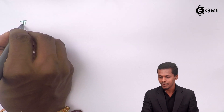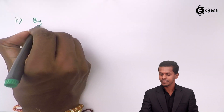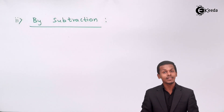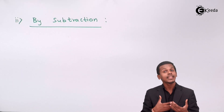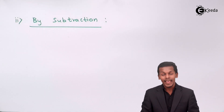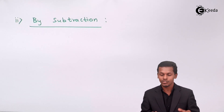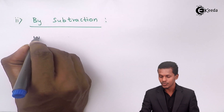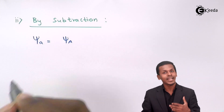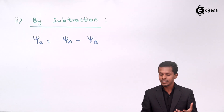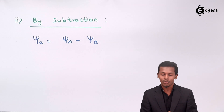Anti-bonding orbitals are formed because of subtraction — this is the second method. Whenever two atomic orbitals are out of phase, or of opposite phase, only then can we say that anti-bonding orbitals will be formed. This is also what we represented in the previous lecture by the LCAO method, where the two atomic orbitals are subtracted from each other to produce the anti-bonding orbital.